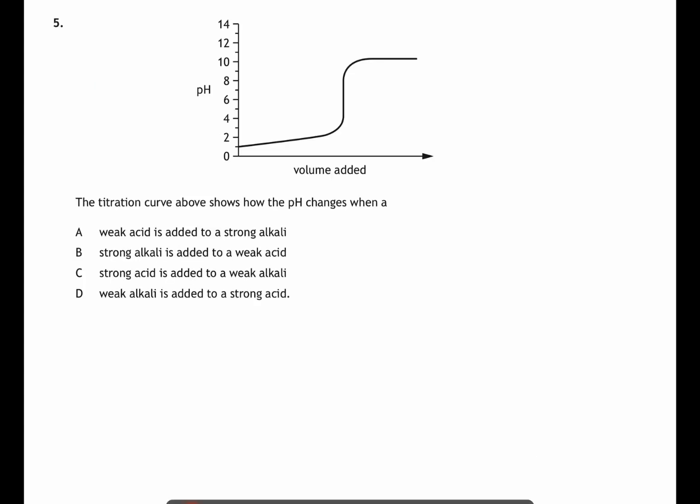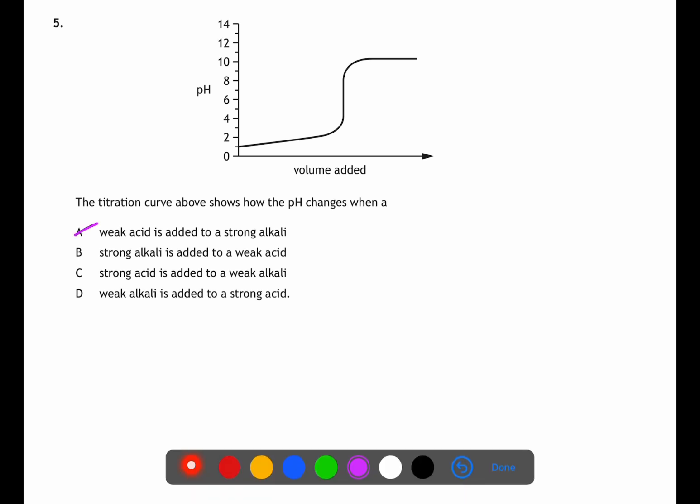For question five we're looking at a titration curve. Here we can see that the pH starts off at just below two and increases, this means that an alkali is being added to an acid. If we have a look at the straight line part of the graph we can see that this is below seven, this means that we're adding a weak alkali to a strong acid.